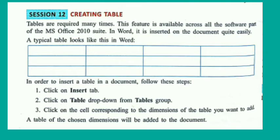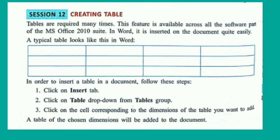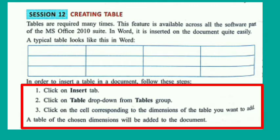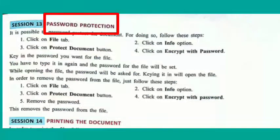Next we will see creating a table. Tables are required many times in MS Word. To create a table, click on the Insert tab, then click on the Table drop-down from the Table group, then click on the cell corresponding to the dimensions of the table you want to add. A table of the chosen dimensions will be added to the document.